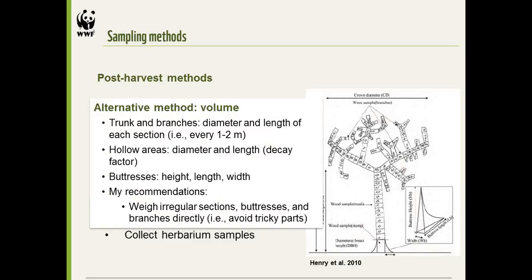There's an alternative method: basically just measure the volume of the trunk and branches, estimate hollow areas, and measure height, length, and width of buttresses. I would recommend weighing any irregular sections and the buttresses directly — anything that would have quite high uncertainty in the volume estimate, I recommend measuring directly.